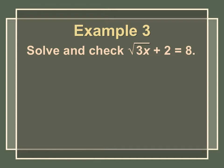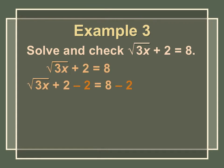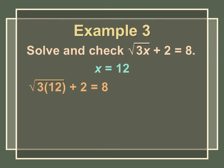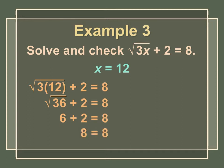Solve and check: √(3x) + 2 = 8. First, subtract 2 from both sides to isolate the radical: √(3x) = 6. Next, square both sides: 3x = 36. Then divide both sides by 3: x = 12. Now check by substituting 12 for x: 3 × 12 = 36, √36 = 6, and 6 + 2 = 8. That works, so x = 12 is our answer.